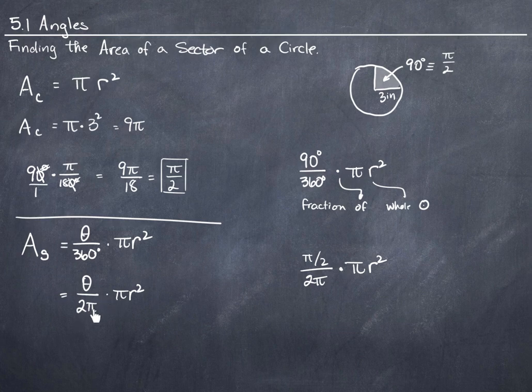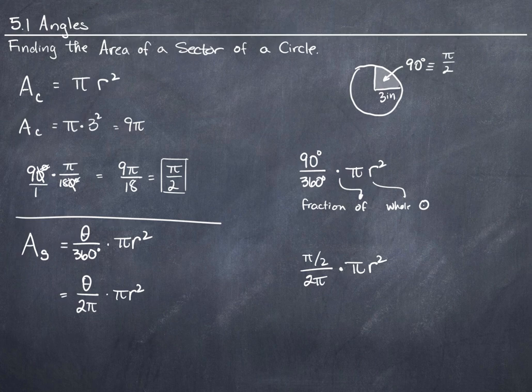Or theta divided by 2 pi times pi r squared. Now, in this case, these pi's will cancel. But in this case, we don't have one to cancel with. It doesn't matter.